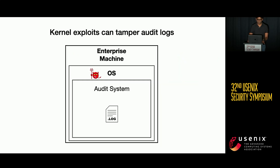But why is that the case? In today's times, attackers don't just compromise unprivileged software, but are also capable of attacking the kernel. And following a kernel-level attack, the audit system getting compromised is imminent, such that not only can the audit system not be trusted post-compromise, but the logs residing on the compromised machine can be easily tampered with — meaning the attacker can either delete or modify them.